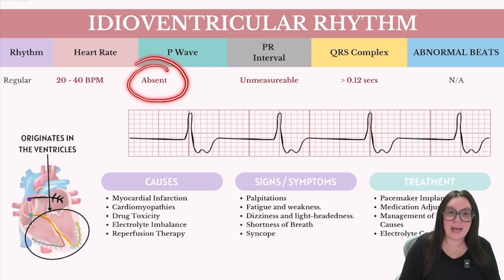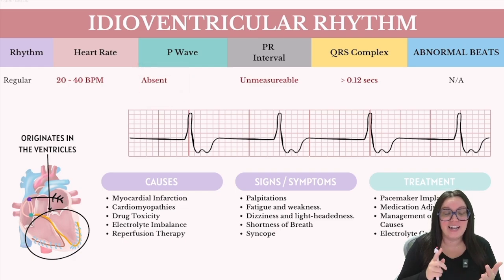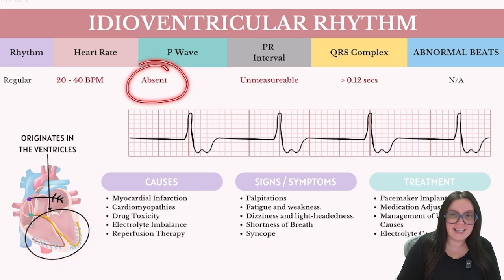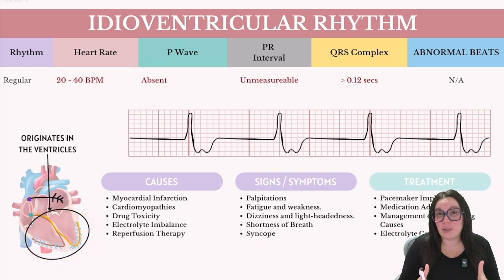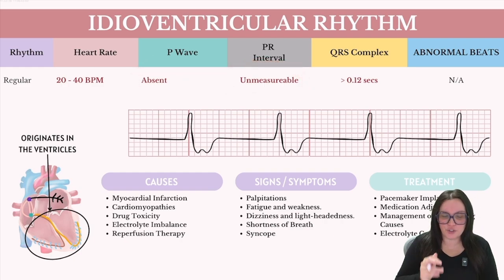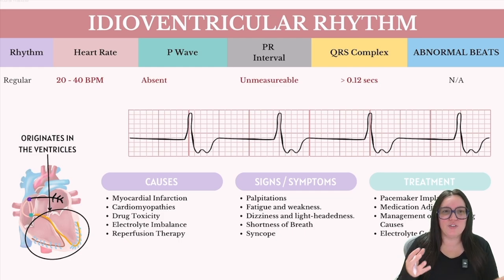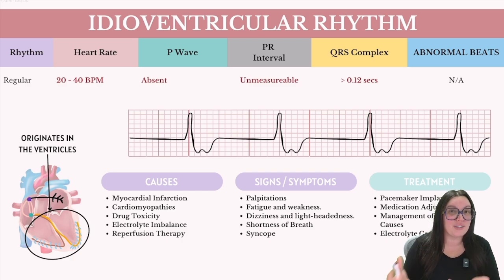The P waves in this rhythm are going to be absent. The SA node and AV node are no longer functioning, so all of the electrical activity is only happening down in the ventricles — you're not going to see any atrial activity. Likewise, you're not going to see a PR interval; it's going to be unmeasurable. The QRS complex is going to be big, wide, and ugly, exceeding the normal range of 0.12 seconds, due to the impulse originating inside the ventricles using an abnormal pathway for ventricular activation.